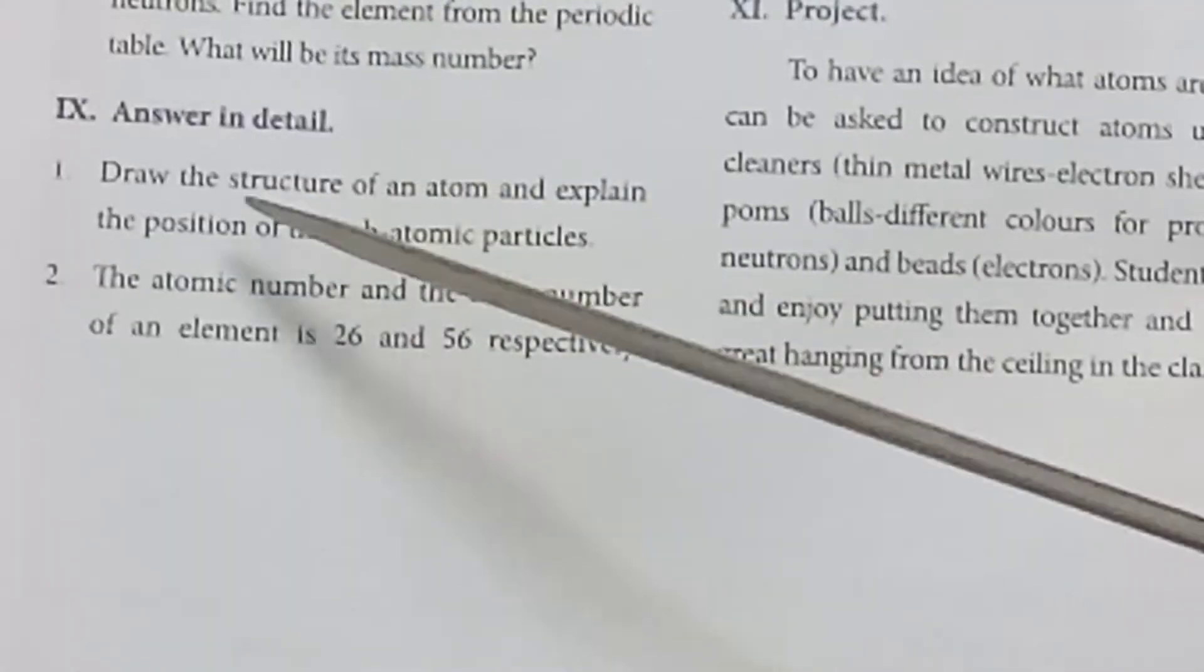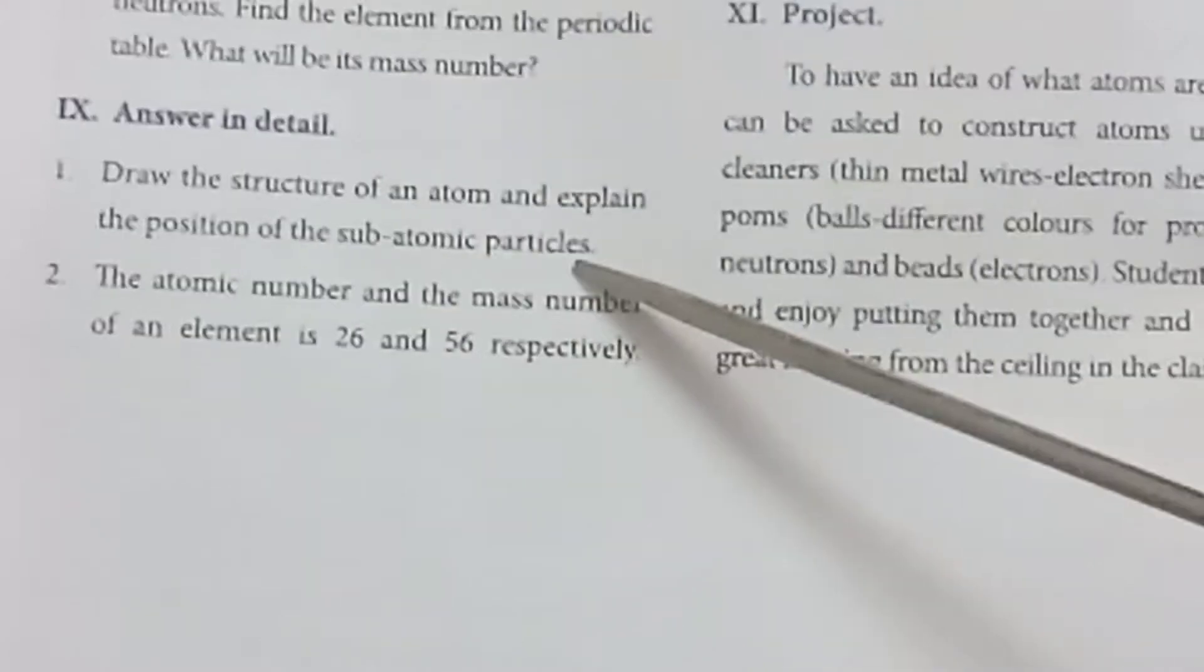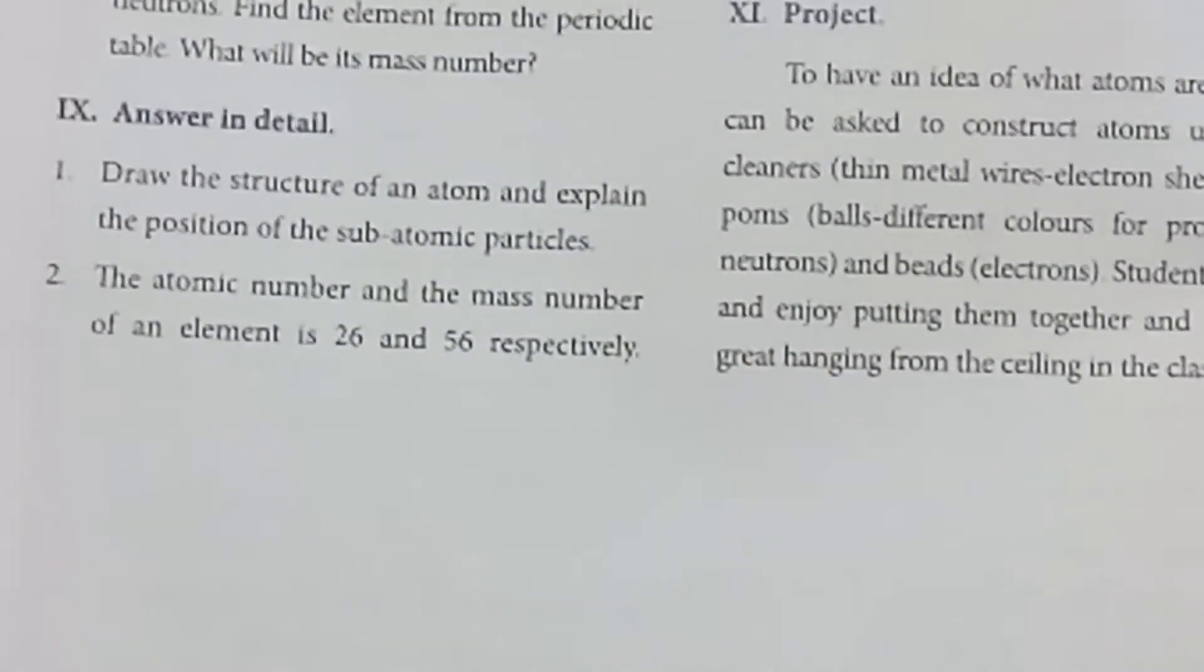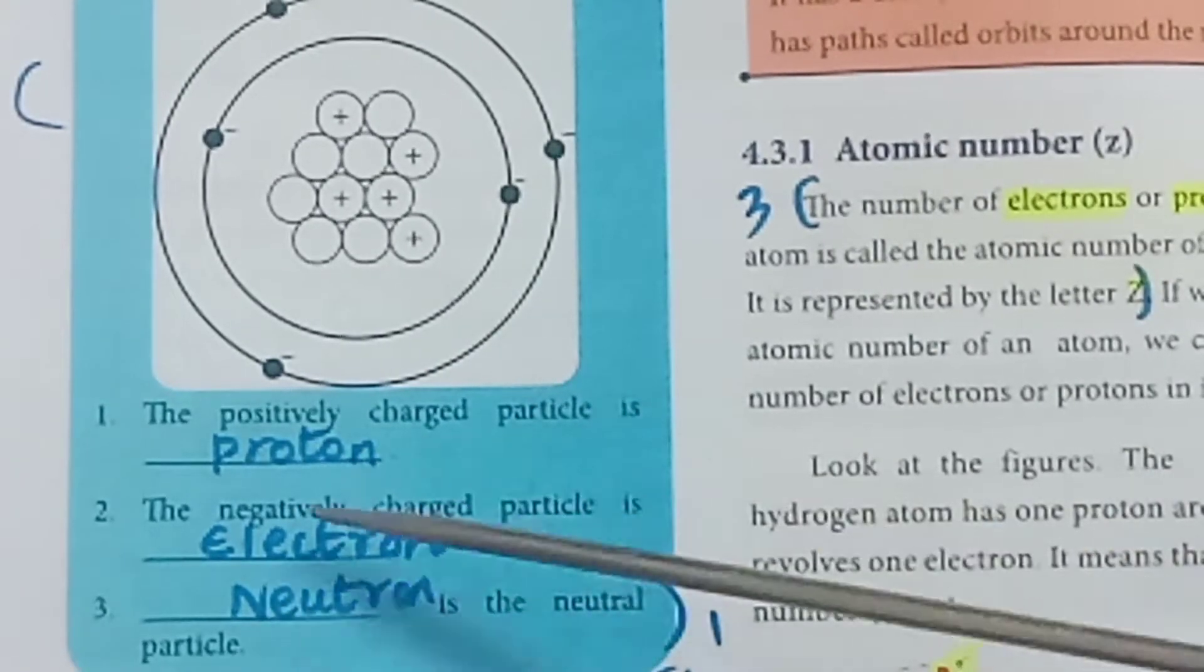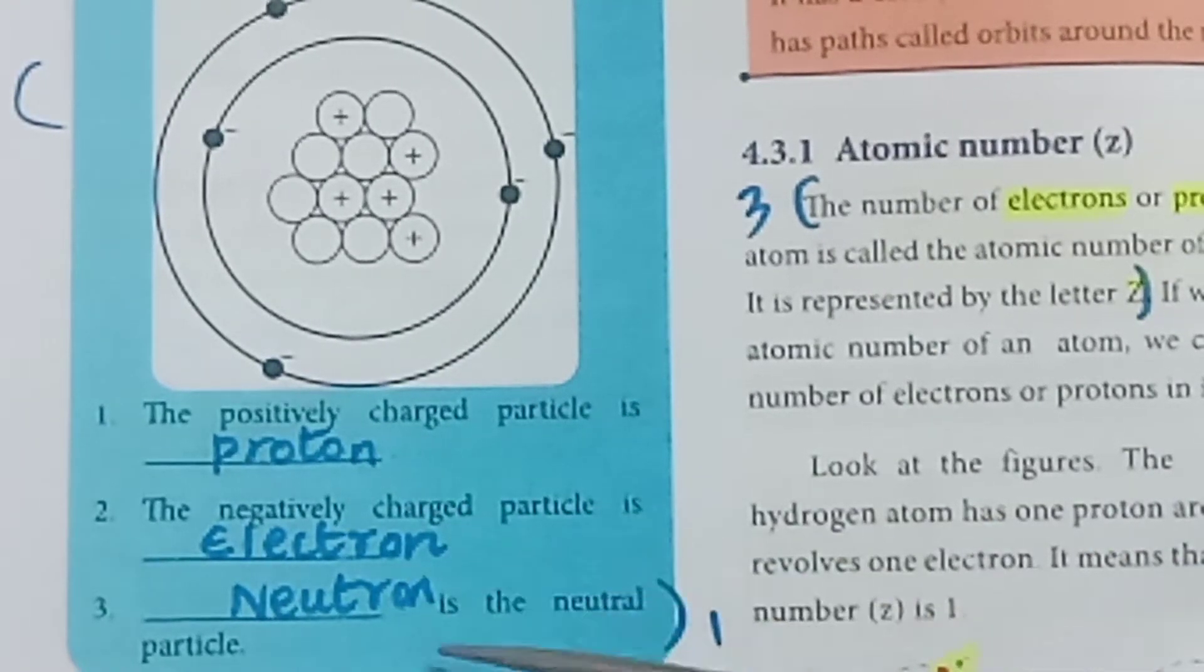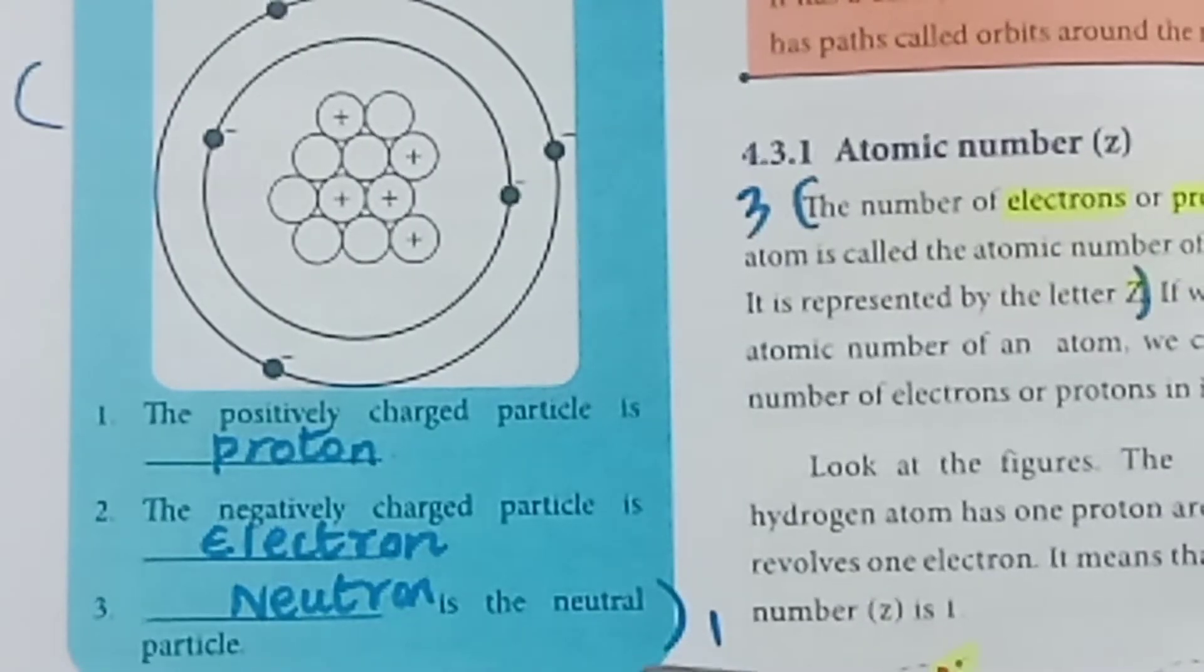Question 9: Answer in detail. Draw the structure of an atom and explain the position of the subatomic particles. Page number 46 in the diagram. The positive charge particle is proton, the negative charge particle is electron, neutron is the neutral charge.